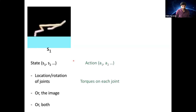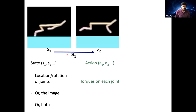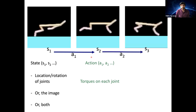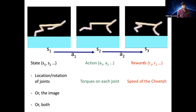The next thing to define is how the system affects its environment — the action space. The action space could be the torque applied on the motors at each joint. When I take an action I end up in the next state, and then we define a reward. The reward could be the speed at which the cheetah is moving. My problem becomes: can I come up with the torques to apply that maximize the velocity of motion?